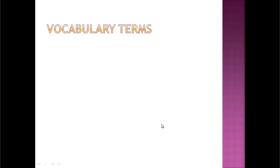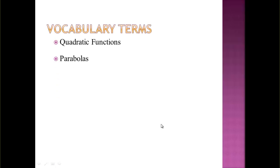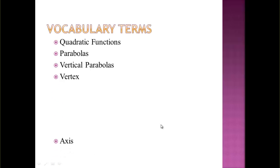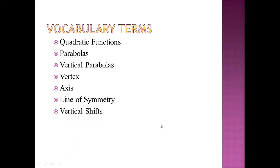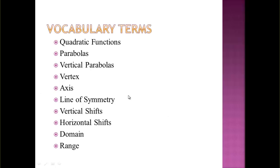Now let's look at the vocabulary terms involved with vertical parabolas. We have: vertex, axis, line of symmetry, vertical shift, horizontal shift, domain, and range.